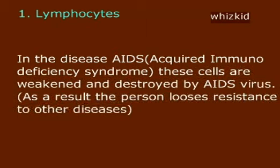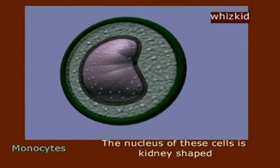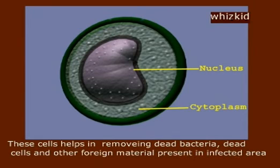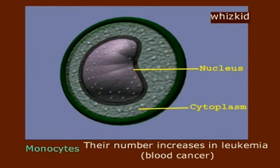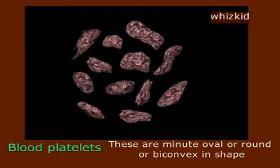In the disease AIDS, lymphocytes are weakened and destroyed by the AIDS virus, causing the person to lose resistance to other diseases. Monocytes are the biggest of all white blood corpuscles. The nucleus of these cells is kidney-shaped, and they help in removing dead bacteria, dead cells, and other foreign material from infected areas. Their number increases in leukemia, that is, blood cancer.